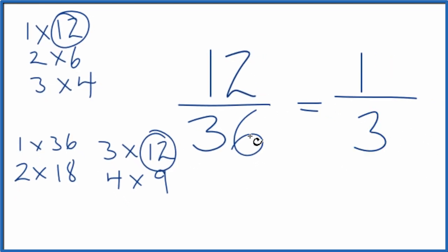So we've reduced the fraction 12 over 36 down to one third. We can't reduce one third any further. And these are equivalent fractions. If you divide 12 by 36 or one by three, you'll get the same number. It's just that we've reduced or simplified 12 over 36 down to one third.